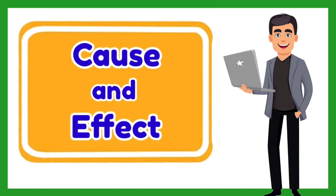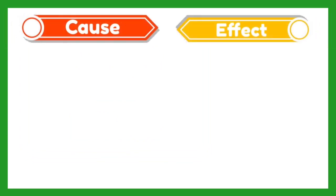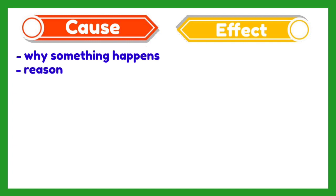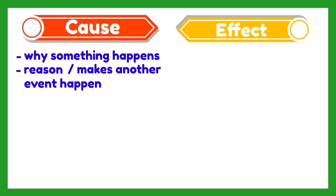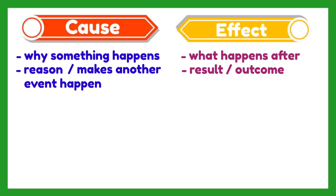Let us start by knowing the meaning of cause and effect. Cause tells us why something happens. In other words, it is the reason for an event or it makes another event happen. Effect is what happens after that event or after the cause. It is the result, the outcome, or the consequence.